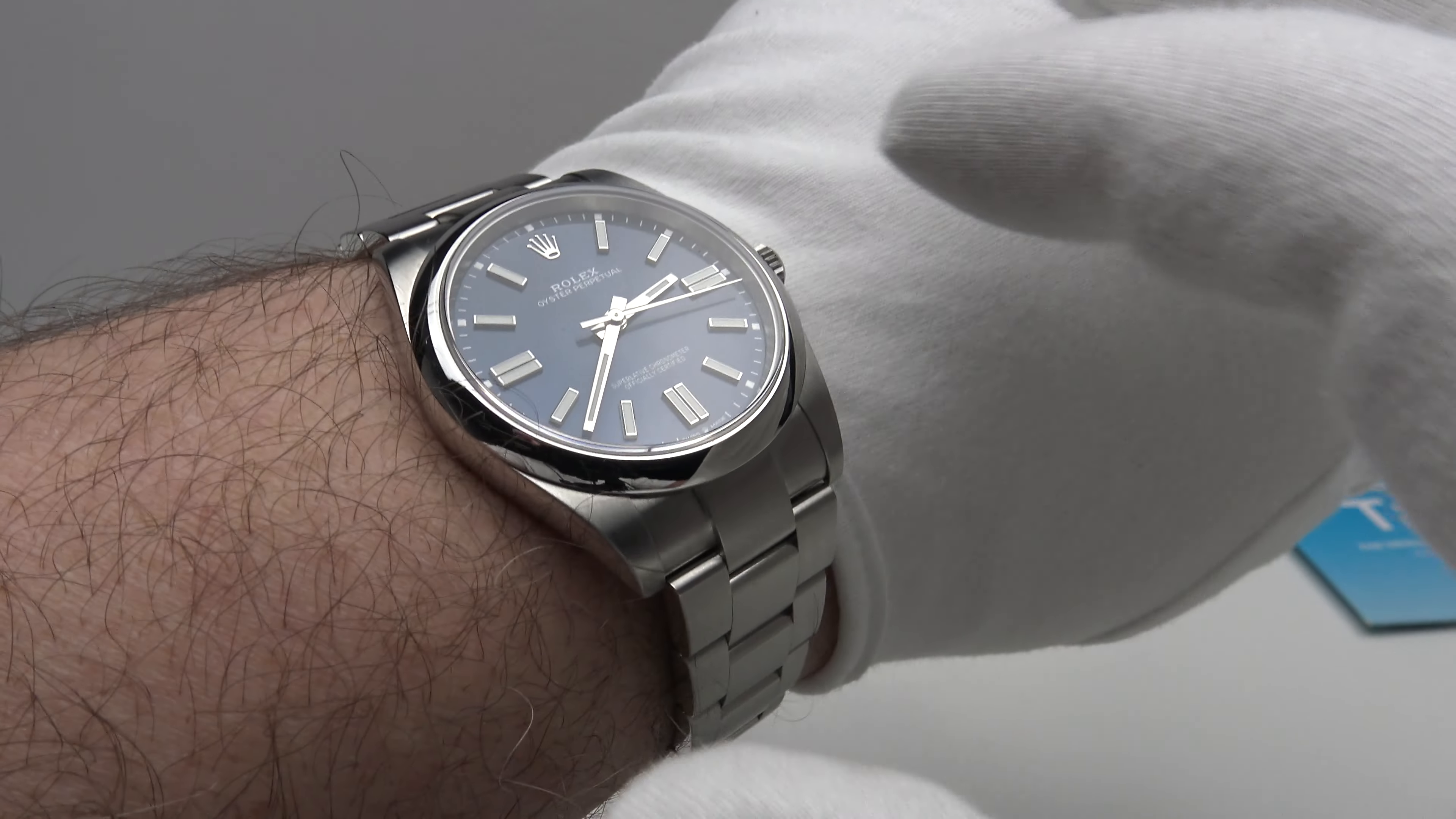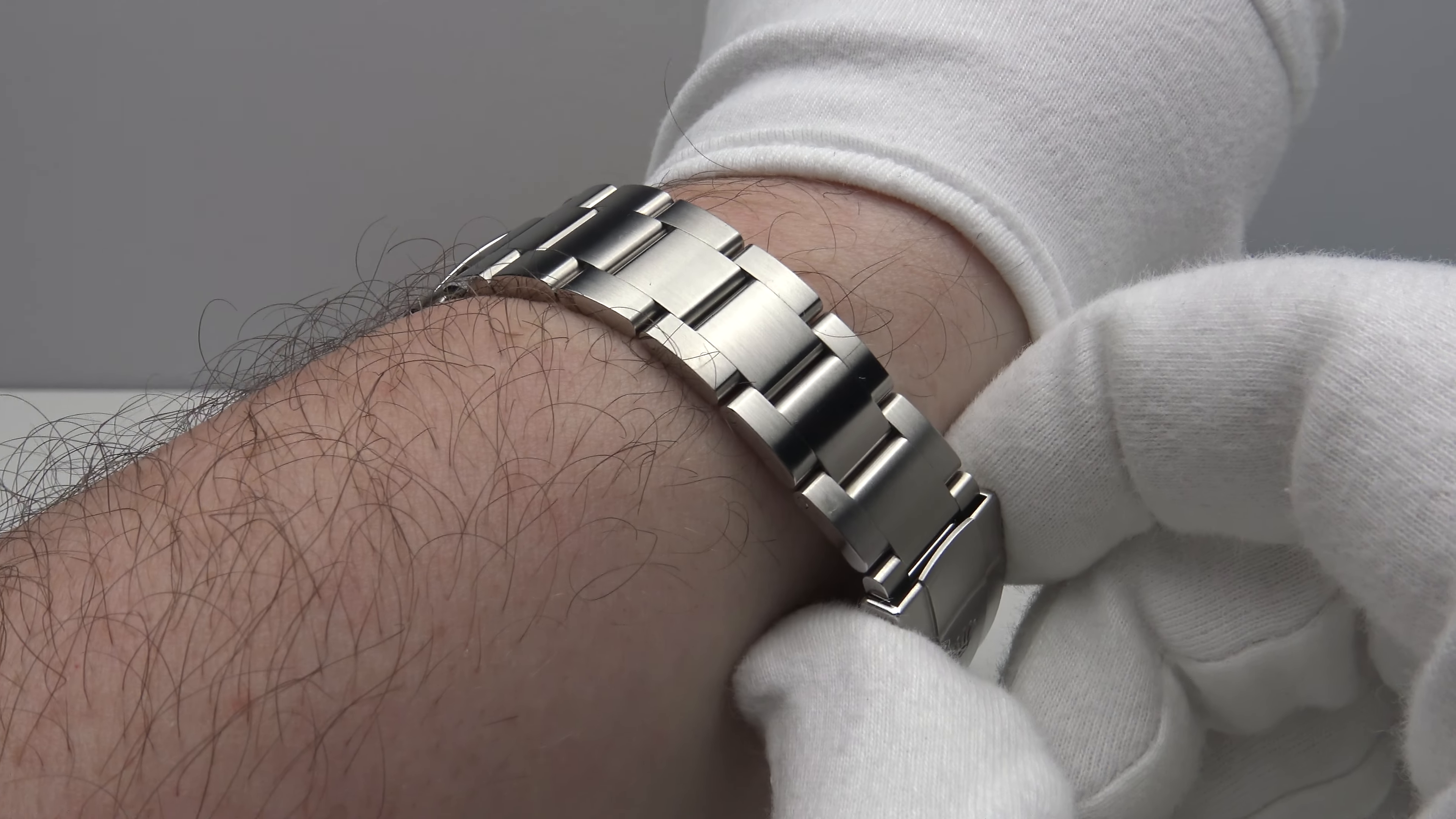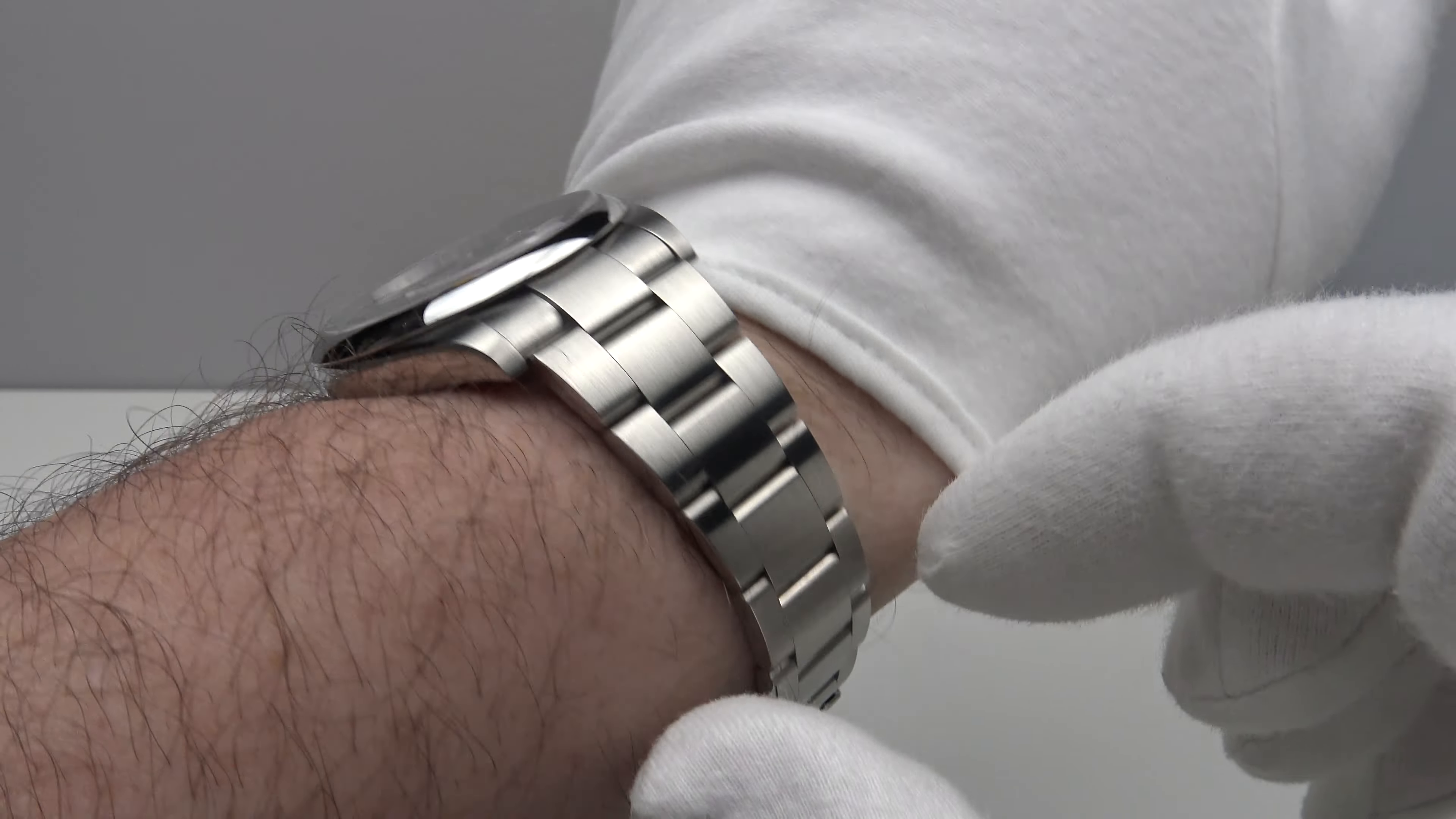Now, it's a mistake that collectors often make. I've often seen collectors with both jubilee and also oyster bracelets. They size the bracelet so that it is a tight fit on their wrist. There's no room for wrist expansion. And they either rely upon the easy link extension or alternatively the glide lock mechanism to adjust the bracelet. But that's actually the incorrect method.